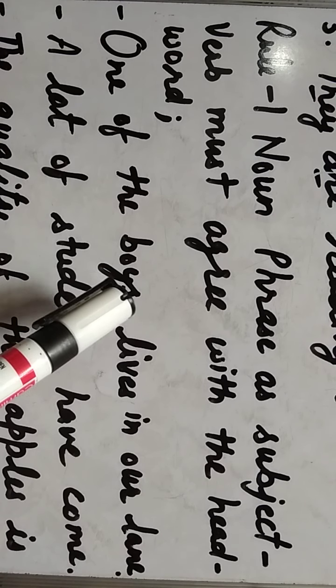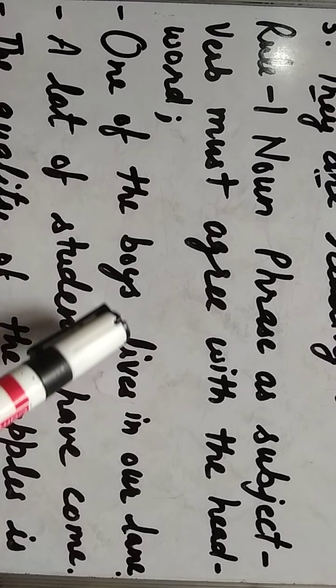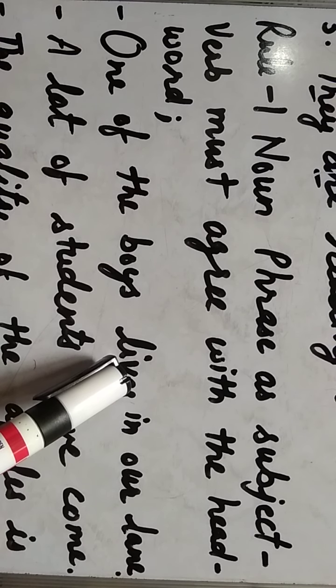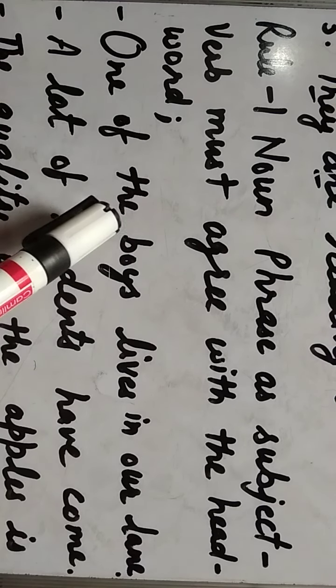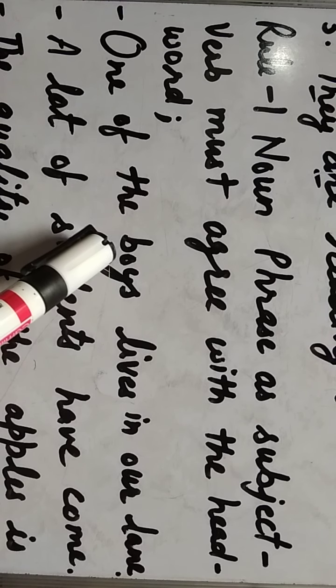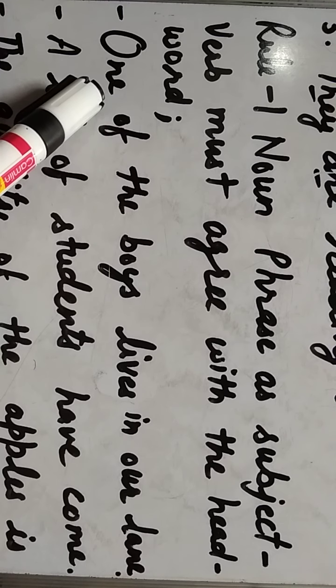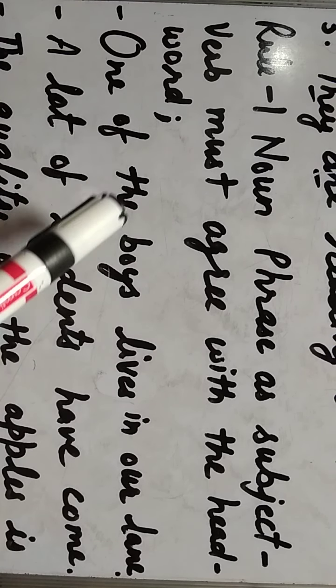For example: 'One of the boys leaves in our lane.' यहाँ boys plural है, पर हम plural verb use नहीं करेंगे। Rule यह है कि 'of' से पहले का word देखना है — head word वही होता है। 'of' के बाद चाहे singular हो या plural, हम उसे नहीं देखेंगे। अगर 'of' से पहले singular है तो verb singular होगी, और 'of' से पहले plural है तो verb plural होगी।